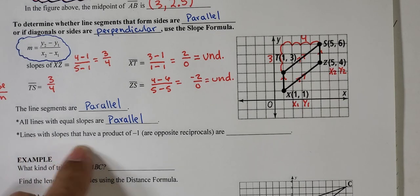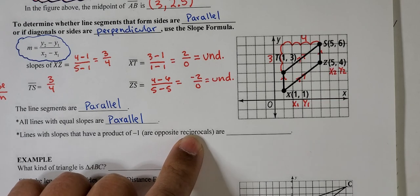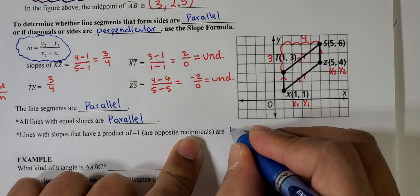Lines with slopes that have a product of negative 1, or are opposite reciprocals, are perpendicular.